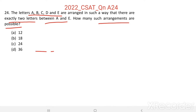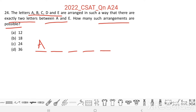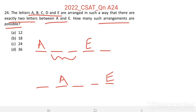Suppose these are the five places where we need to arrange these five letters. If A is in the first place, then between A and E there are exactly two places, so E goes in the fourth place. Another arrangement: if A is in the second place, then we can place E in the fifth place.